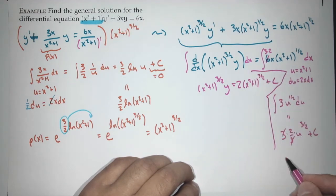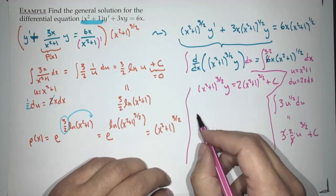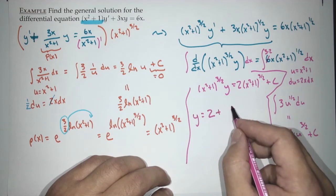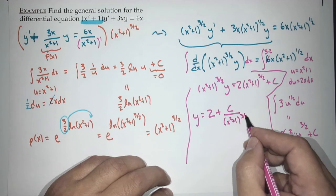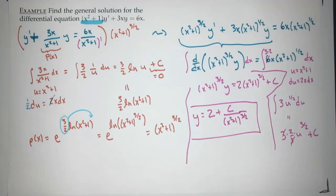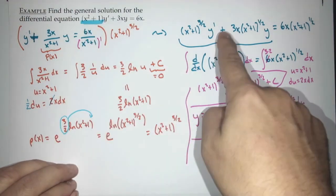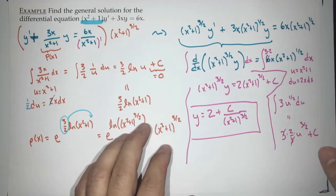Dividing everything by (x²+1)^(3/2) to solve for y: y = 2 + c/(x²+1)^(3/2). Make sure every term gets divided by (x²+1)^(3/2). And now we're really done. The flavor is: make sure it's in the right form, find the integrating factor, multiply both sides, left side is easy, right side requires some work. Clean it up. Life is good.